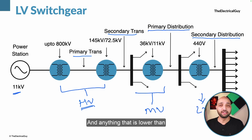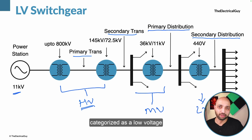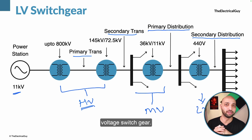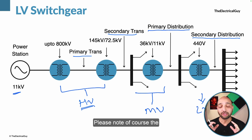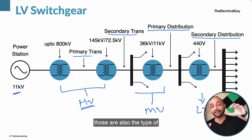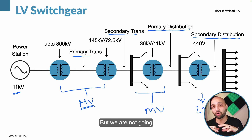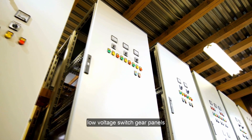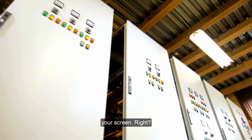Anything that is lower than 1000 volts is categorized as low voltage switchgear. In this video we are going to focus on low voltage switchgear panels, not the household switches, MCBs, breakers, or fuses. What we are mainly focusing on is the low voltage switchgear panels like what you can see on your screen.